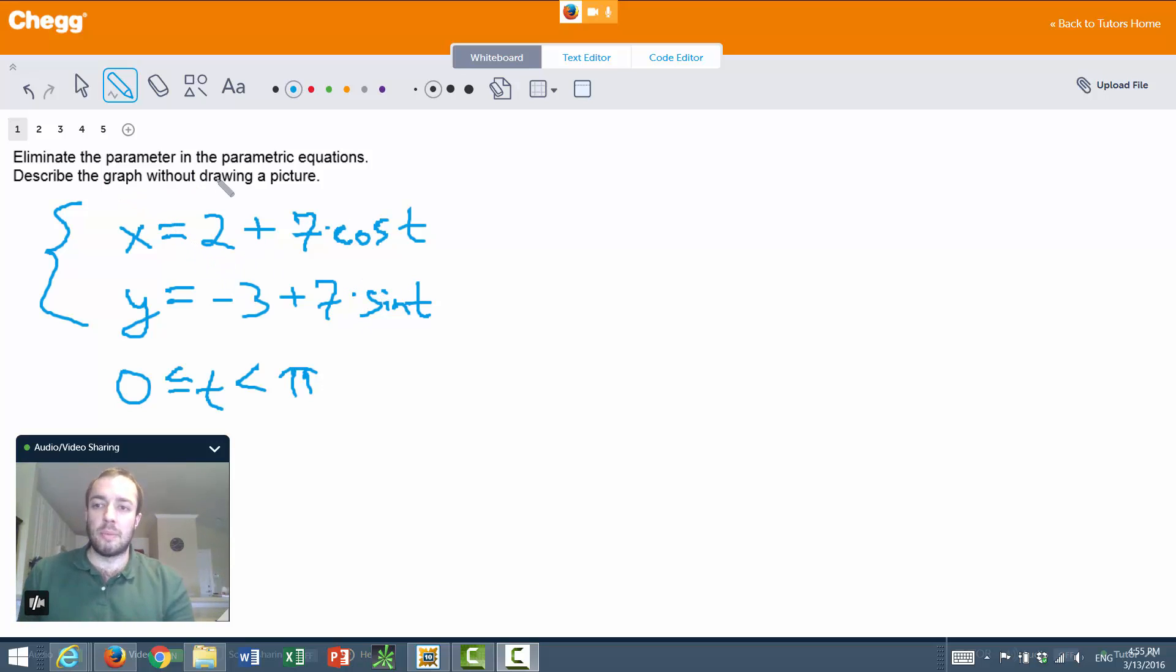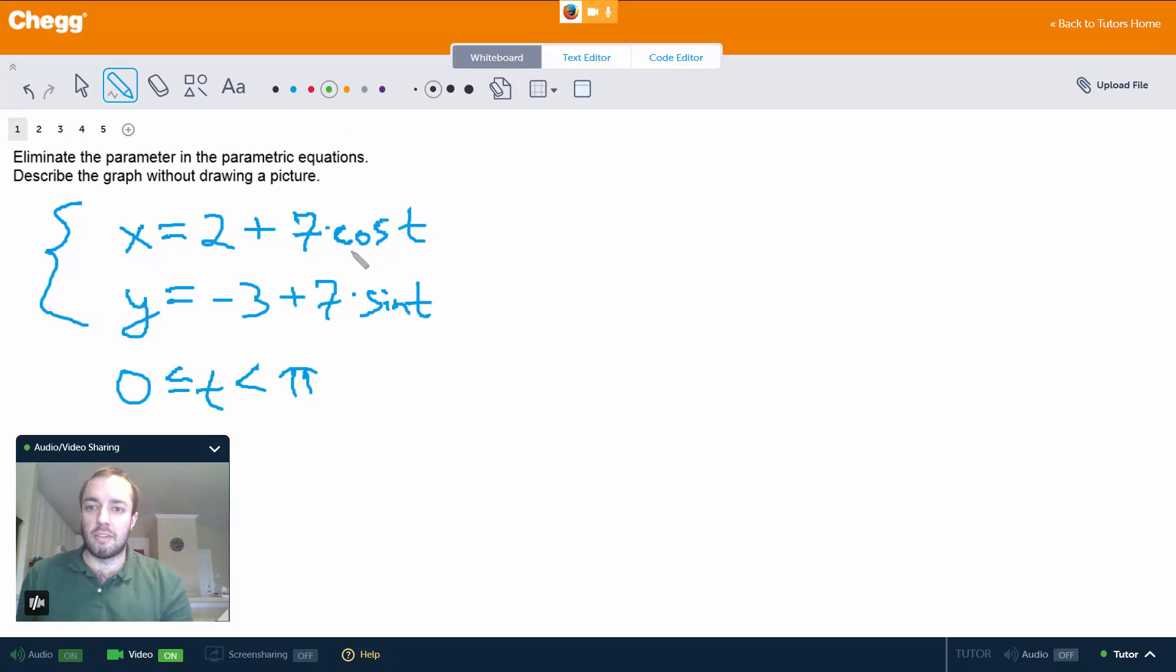So eliminate the parameter means get rid of the t and just express everything in terms of x's and y's. So how are we going to do that? Well notice we have cosine of t and sine of t. So we might think to ourselves, do we know any identities or formulas involving cosine and sine that could help us get rid of this? And one thing that should hopefully always jump to mind is cos²t + sin²t = 1.